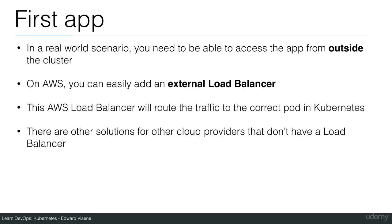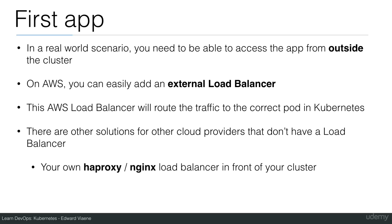There are other solutions for other cloud providers that don't have a load balancer. You can run your own HA Proxy or NGINX load balancer in front of your cluster, or you can expose ports directly. In this lecture, I will show you how to do it with AWS.